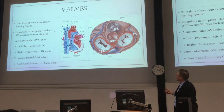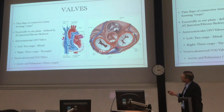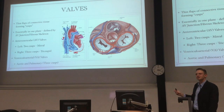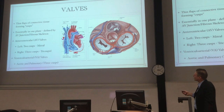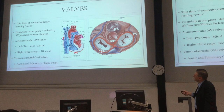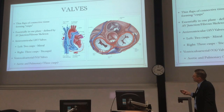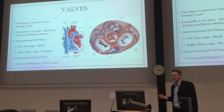The mitral valve guards the left side of the AV orifice. It's got two cusps, admits two fingers, and also has chordae tendineae running down to papillary muscles at its free edge. It has an anterior leaflet and a posterior leaflet. The anterior leaflet is actually smaller on the annulus than the posterior leaflet, but its area is larger.